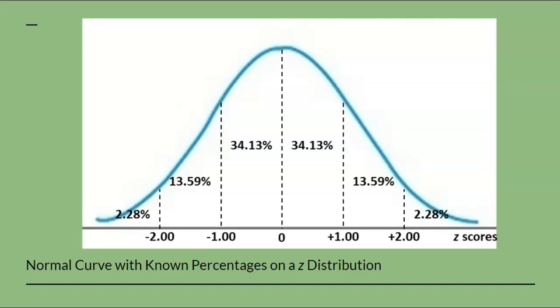For example, z-scores that fall within one standard deviation above and below the mean occur approximately 68% of the time.